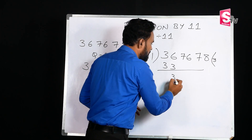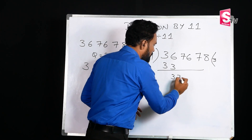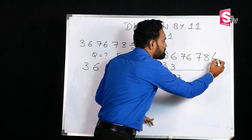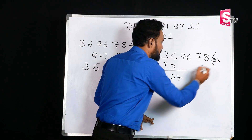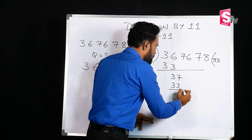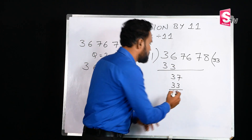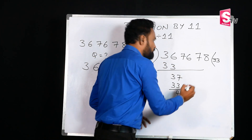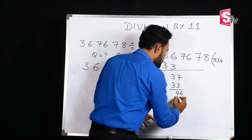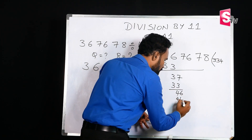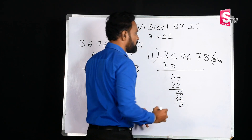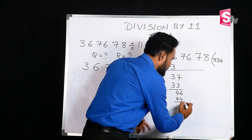36 minus 33 is 3. Drop 7. Again, 11 times 3 are 33. The remainder is 4. Drop 6. Drop 6. 11 times 4 are 44. The remainder is 2.